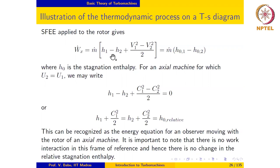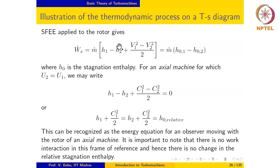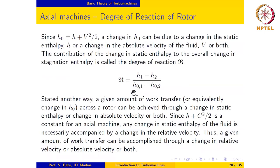This naturally leads to the definition of a very important performance parameter of a turbomachine, namely the degree of reaction. Simply put, the degree of reaction is a quantity that signifies how much the enthalpy change contributes to the term in the square bracket. The term in the square bracket is nothing but h01 minus h02. So the degree of reaction R is defined as h1 minus h2 divided by h01 minus h02.